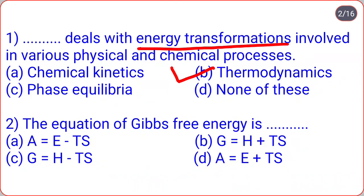Second question: the equation of Gibbs free energy is — A = E − TS, G = H + TS, G = H − TS, or A = E + TS. Gibbs free energy is given by the equation G = H − TS, that is option C.